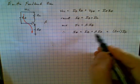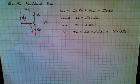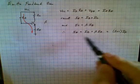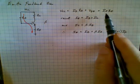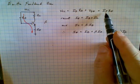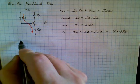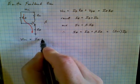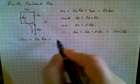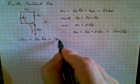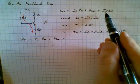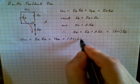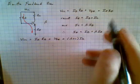Just pulling out the Ib from those terms. So now we can make a substitution of Ie, this term right here, into this equation right here. So we'll just do that. Vcc is equal to Ib Rb plus Vbe plus, now make a substitution for Ie, which is beta plus 1 times Ib times Re.